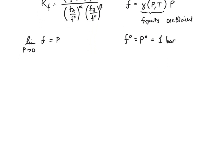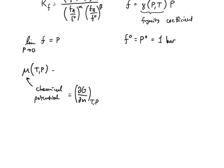Before explaining more about the fugacity coefficient, I want to note something about chemical potential. Remember, μ is the chemical potential — it equals how the Gibbs free energy changes with number of moles, keeping temperature and pressure constant, and also keeping constant the number of moles of any other substances. The chemical potential in general depends on temperature and pressure, and equals some standard state chemical potential at one bar, plus RT ln(F/F°).